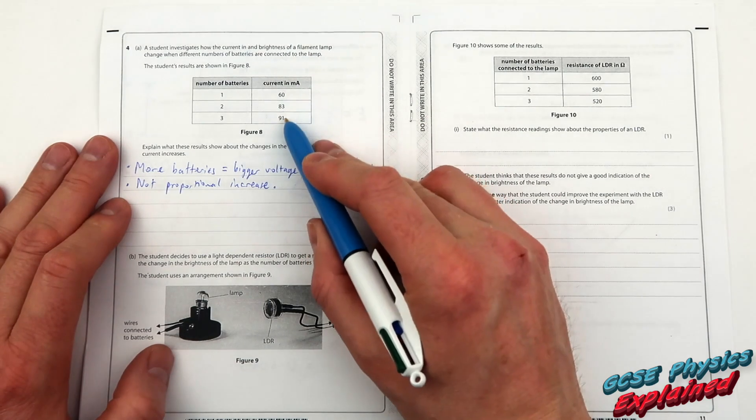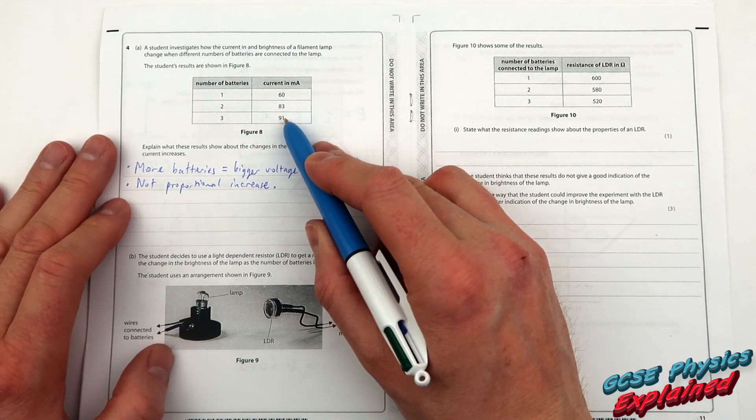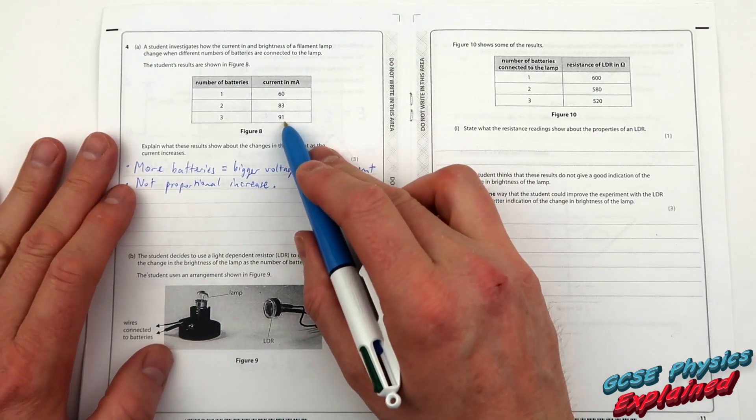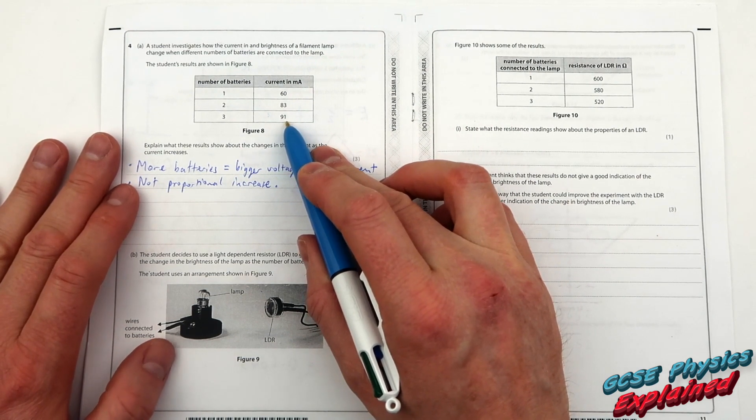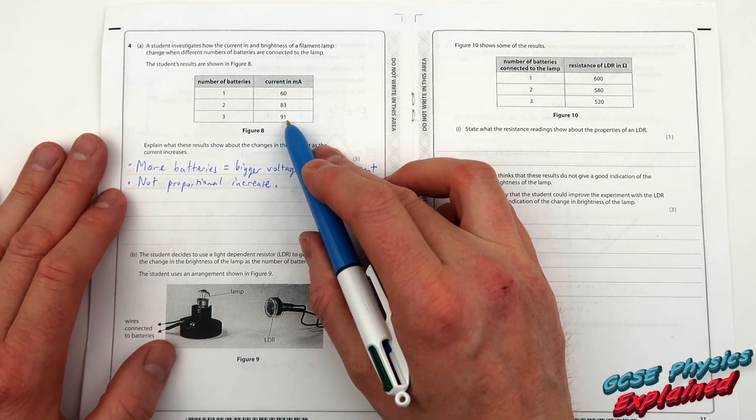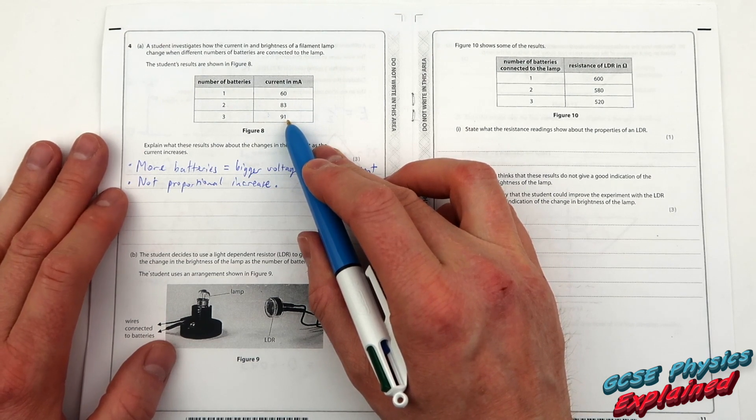Now because the current's not going up by the same amount each time, what must be happening is as you've got more current, the bulb's getting hotter. And that means that the resistance of the bulb is getting bigger.